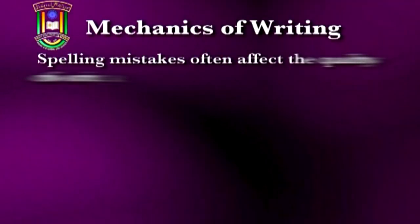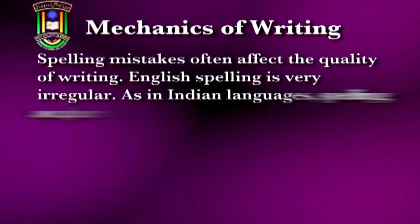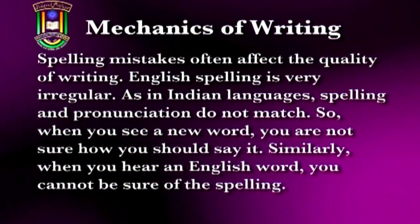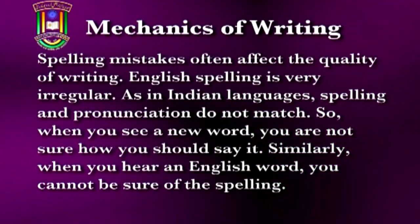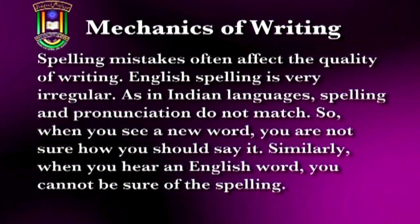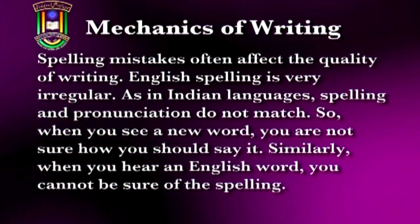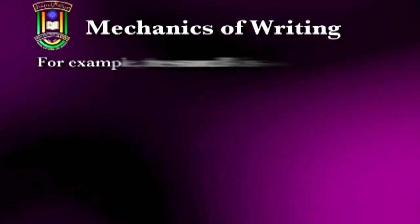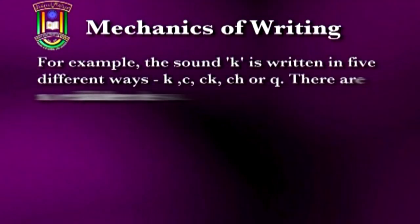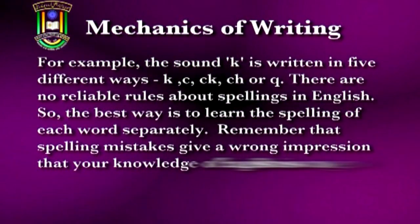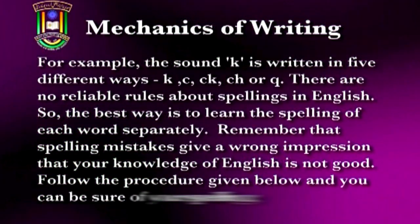Mechanics of writing: spelling mistakes often affect the quality of writing. English spelling is very irregular. As in Indian languages, spelling and pronunciation do not always match. So when you see a new word, you are not sure how to say it. Similarly, when you hear an English word, you cannot be sure of its spelling. For example, the sound 'K' can be written as K, CK, CH, or Q.